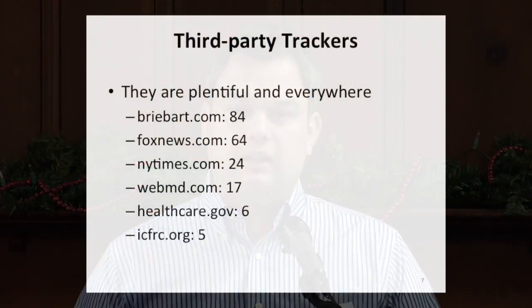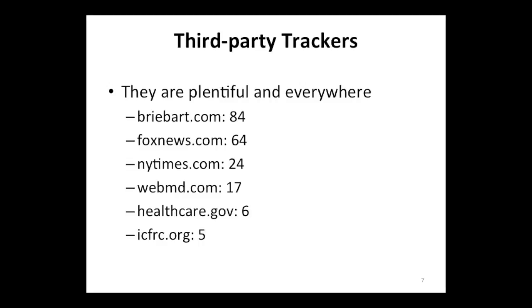This does not end there. If you go to webmd.com — one of the popular sites to figure out if you have a health problem — you'd be surprised to know that 17 different trackers are tracking you on that website. These companies can know if you think you have a disease, or if you're searching for cancer or another health problem. If you go to healthcare.gov to buy health insurance, you might think it's a government website with no trackers, but you are actually tracked by six different companies. Even ICFRC.org has five different trackers for advertising purposes, even though the site isn't serving any ads.